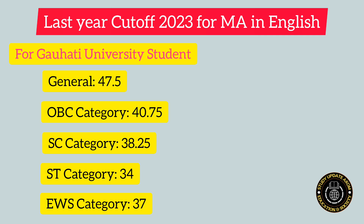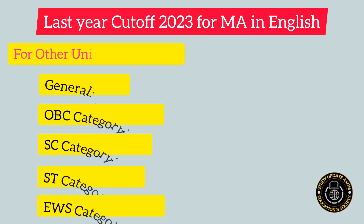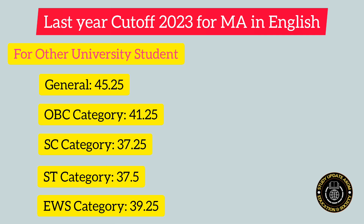For SC category the cutoff was 38.25. For ST category, including ST Hills and Plains, the last year cutoff was 34. For EWS category the last year cutoff was 37.